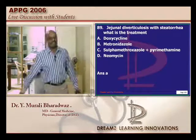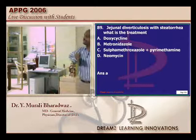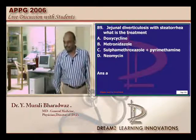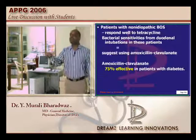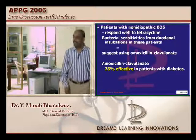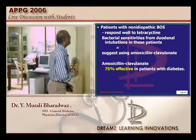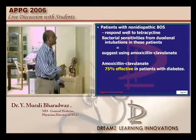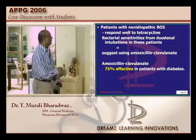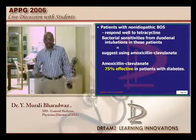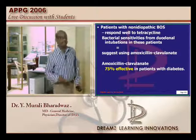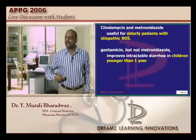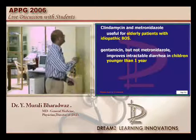Jejunal diverticulosis with steatorrhea — what is the treatment of choice? Diverticulitis is one condition, and bacterial overgrowth syndrome is another. For bacterial overgrowth syndrome, typically tetracycline is considered the best treatment. There is also a role for amoxicillin-clavulanate, particularly in people with jejunal diverticula and diabetes where it has a better role than tetracycline. But otherwise, for all cases of non-idiopathic bacterial overgrowth — where a proven diverticulum is leading to bacterial overgrowth — tetracycline is the treatment of choice.